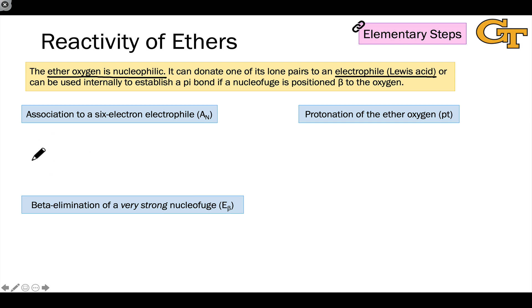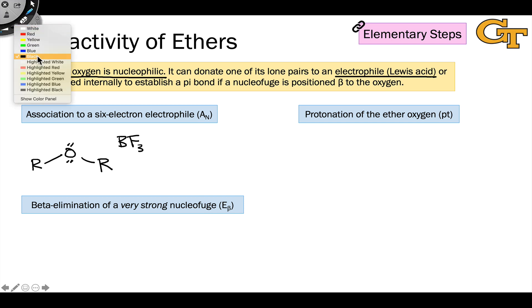For example, the ether oxygen can coordinate to a six-electron electrophile. An example of this might be something like BF3, boron trifluoride, a six-electron building block. The ether oxygen has two lone pairs, and we can draw electron flow that amounts to an A sub n, or association of a nucleophile elementary step, in which a new OB bond is formed.